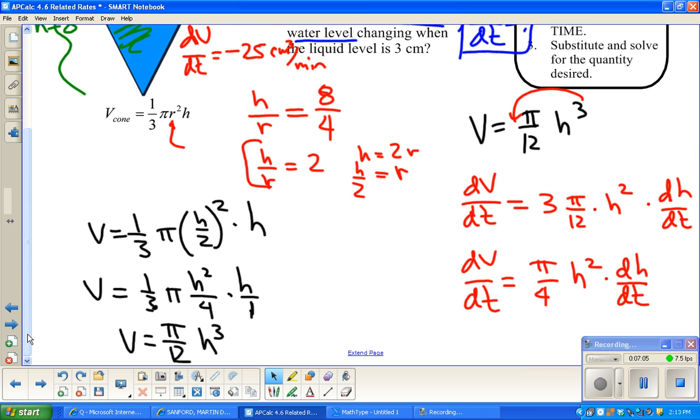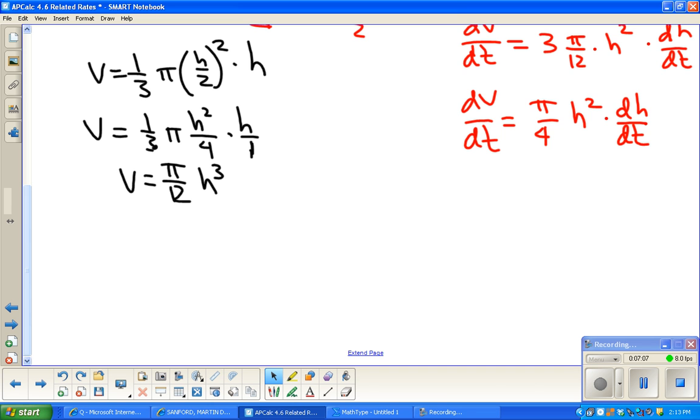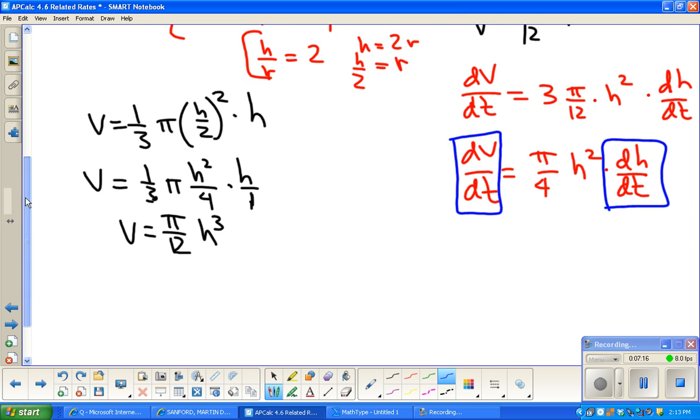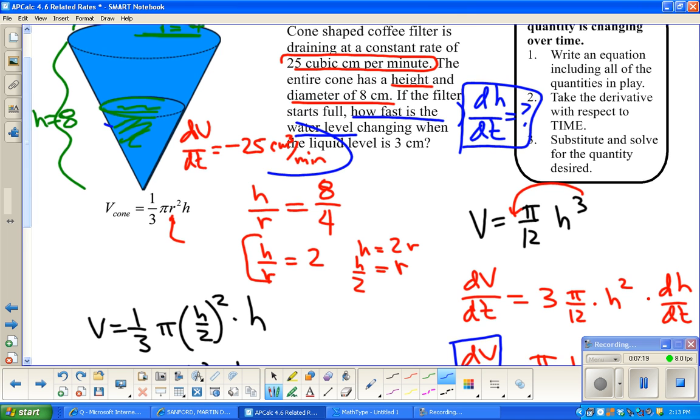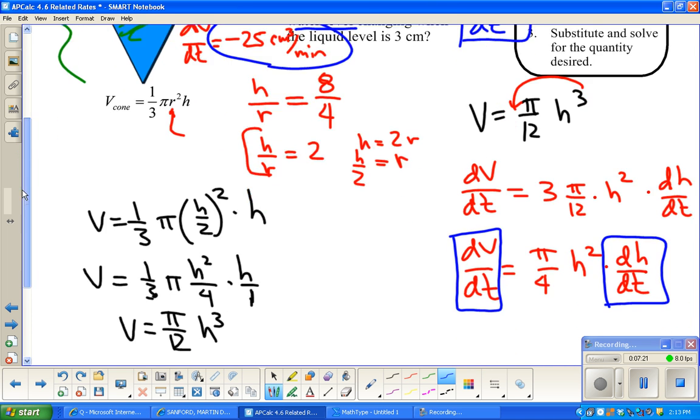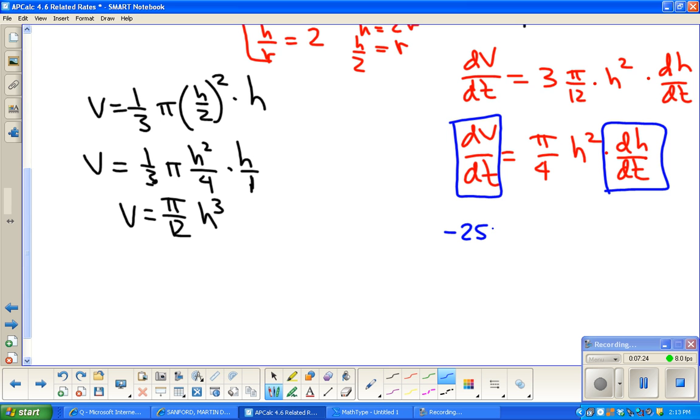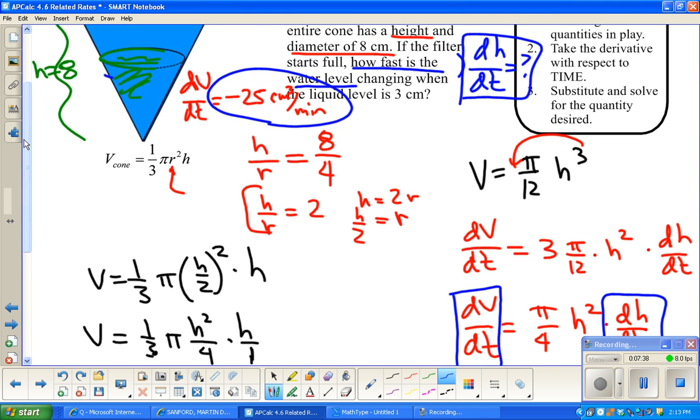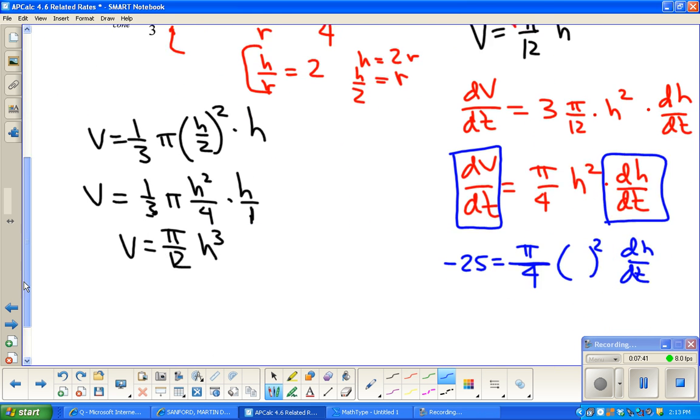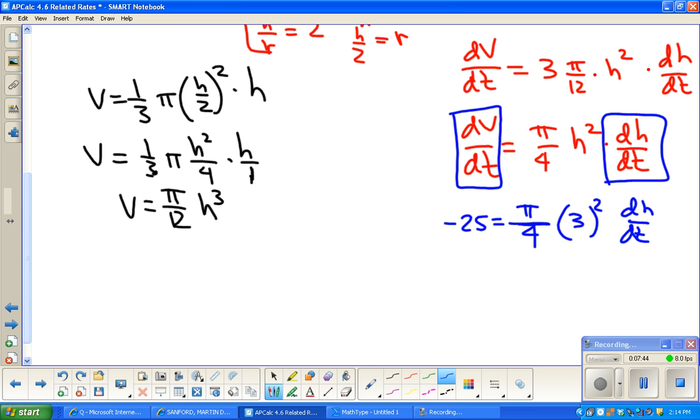Alright, so, with this in mind, I'm trying to find dh/dt. I'm told this. So, let's scroll back up. dV/dt was negative 25 cubic centimeters per minute. So, I'm going to say negative 25 equals π over 4. Trying to find dh/dt. Now, it asked me specifically when the water level is 3 centimeters. So, I'm just going to put 3 in here.